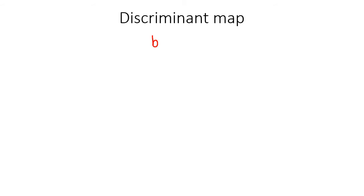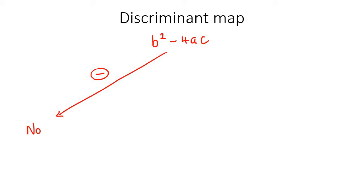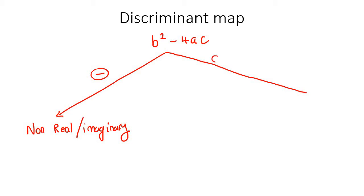I'm going to call it the discriminant map. What you would do is calculate the discriminant. If you get a negative answer — let's say the discriminant is negative — then your answers are non-real, which you could also think of as imaginary. If you get a zero or any positive number, then that would be real.